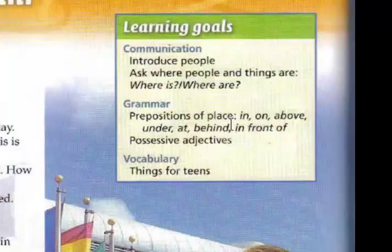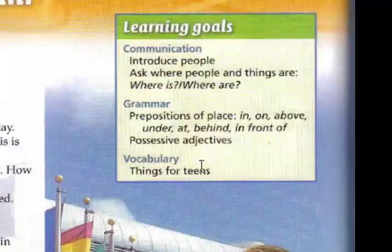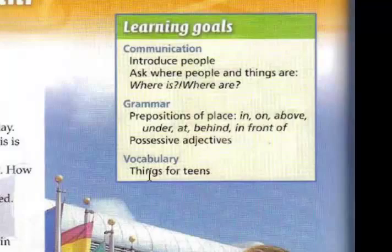La gramática es preposiciones del lugar como in, on, above, under, at, behind, in front of, possessive adjectives. Usted tiene que saber cada una de esas palabras qué significa y cuándo usarla: in, on, above, under, at, behind, in front of. Esas son preposiciones del lugar. Y el adjetivo positivo es muy importante. También vamos a ver un vocabulario de cosas que usan los adolescentes.